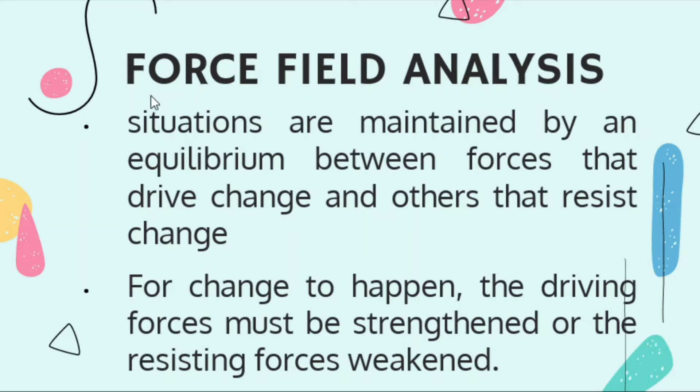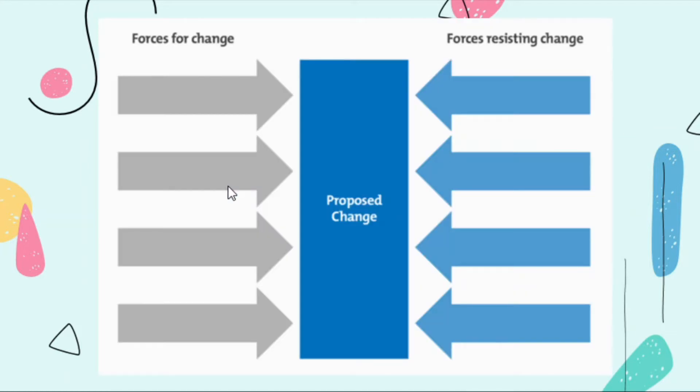This is an example of a Force Field Analysis. This is the worksheet, this is the illustration. For example, here is your proposed change. You will identify the forces for change, the ones supporting the change, and the forces resisting change, the problems that you might face while pursuing this change. This tool is used for making decisions by analyzing the forces for and against the change and for communicating the reasoning behind your decision. Through this you will identify if the forces resisting change outweigh the forces that support the change. Are you going to go with that decision or will you weaken what's resisting and strengthen what's supporting for that change?